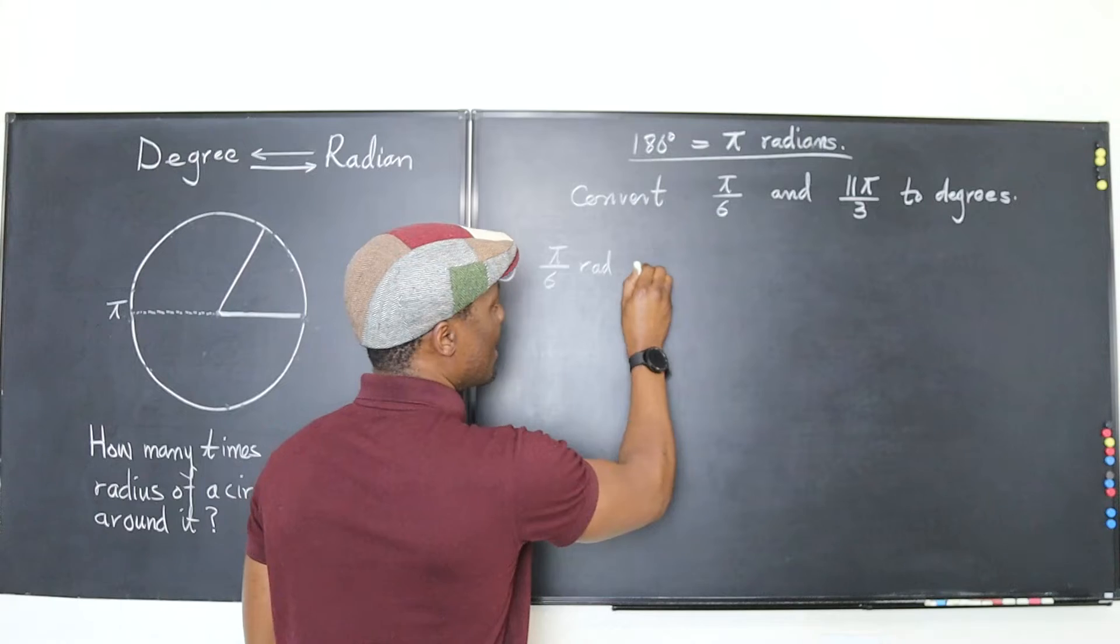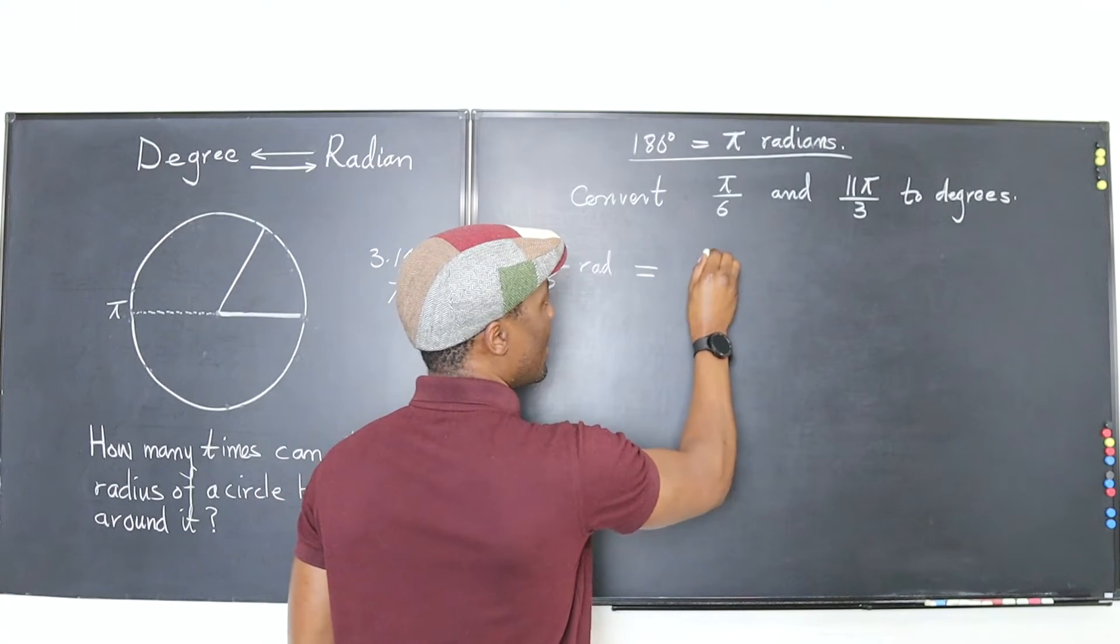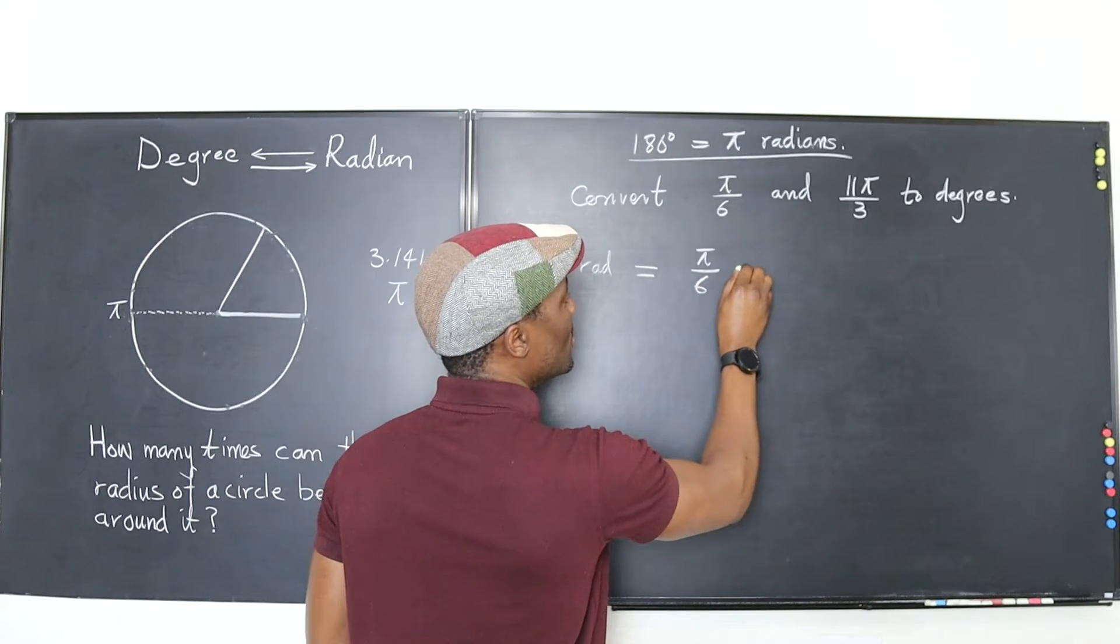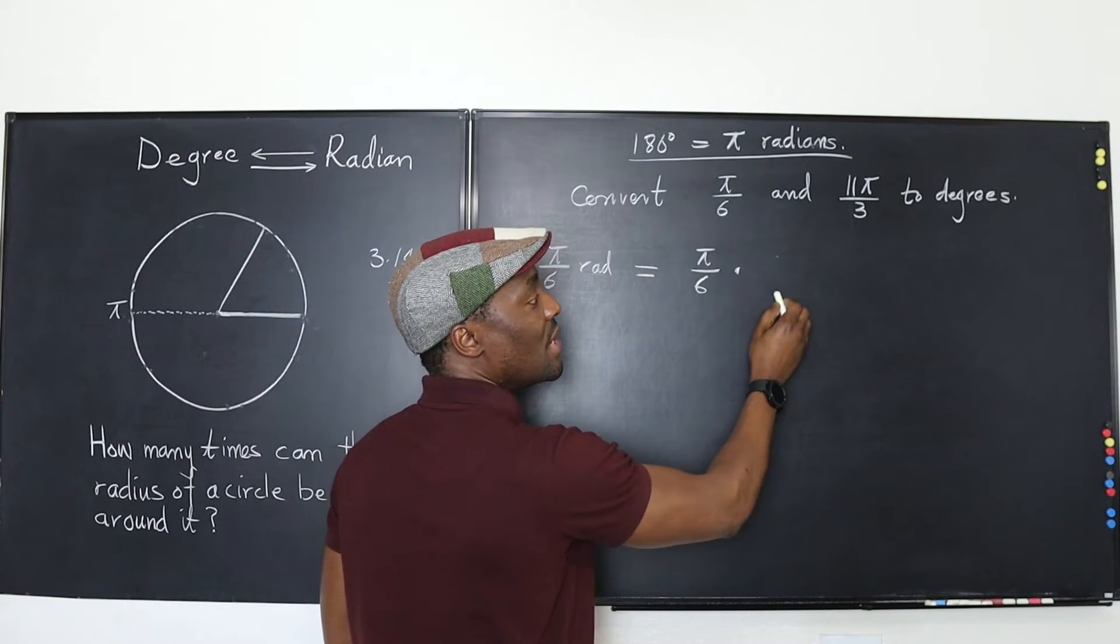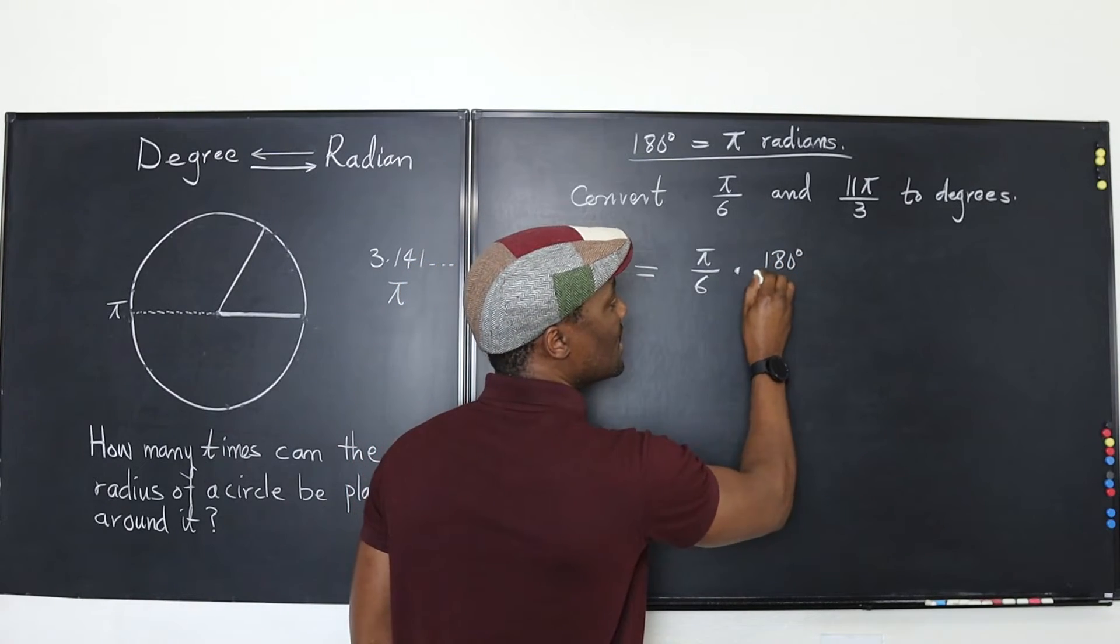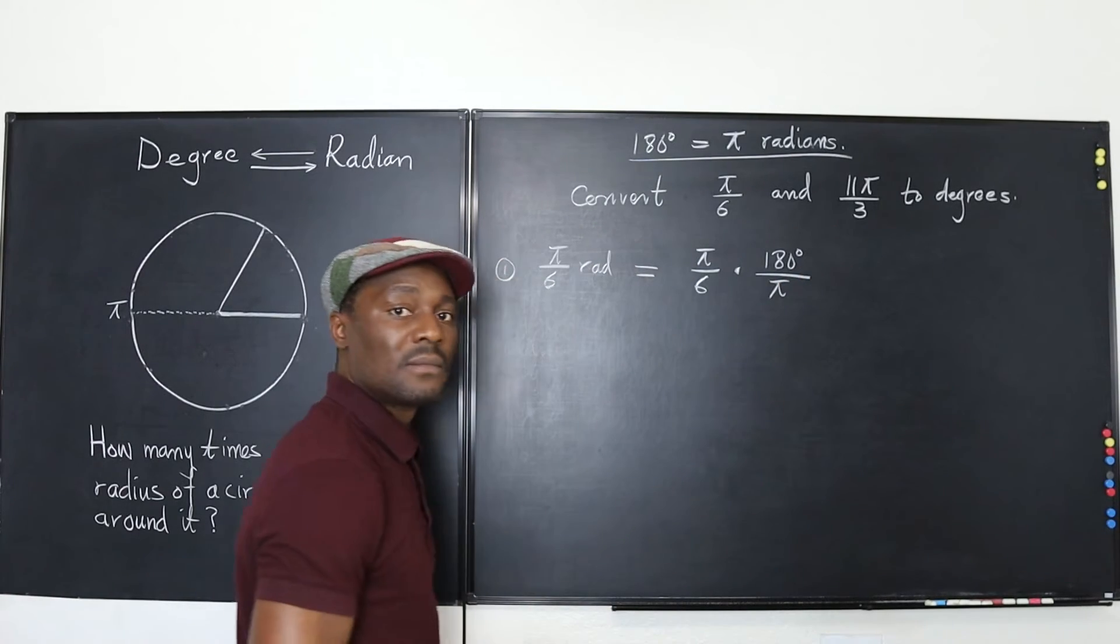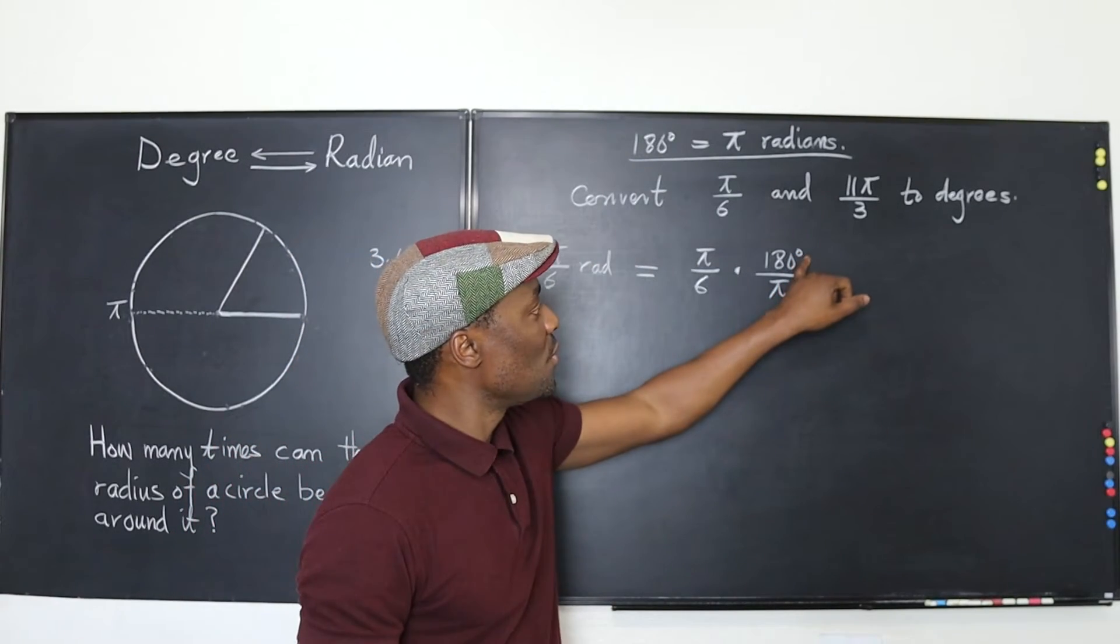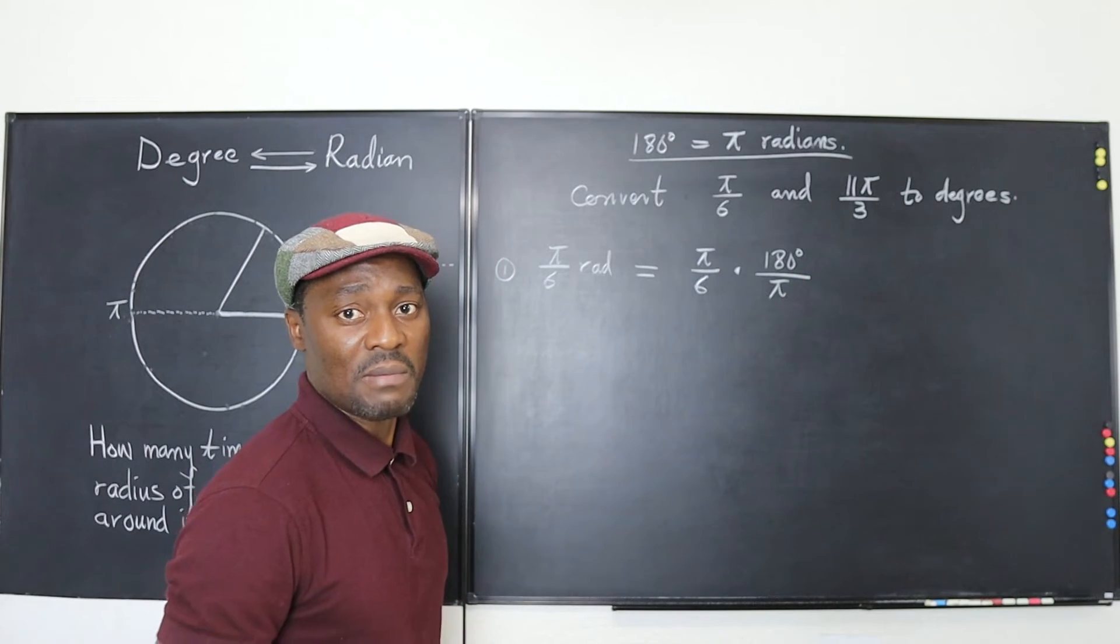Pi over 6 radians can be converted to degrees by writing pi over 6 and multiplying. Instead of multiplying by pi over 180 degrees, you flip it. It becomes 180 degrees divided by pi. That's it.